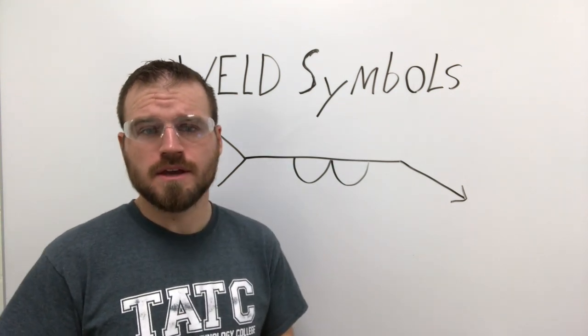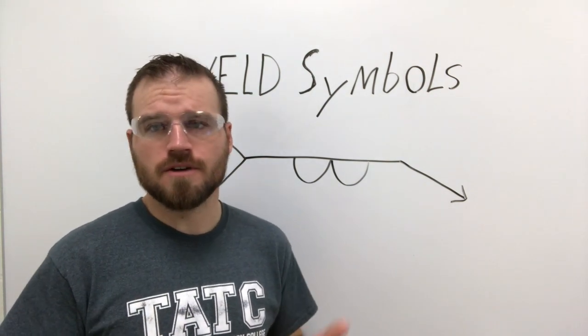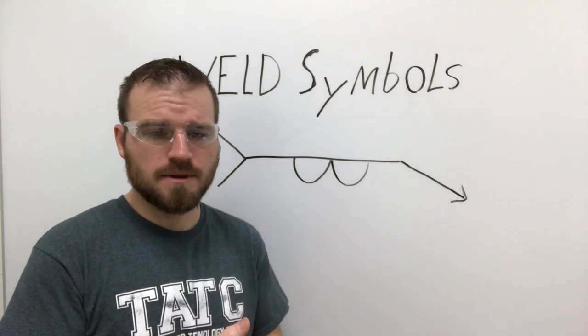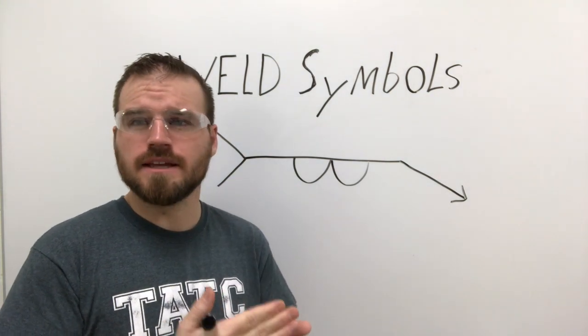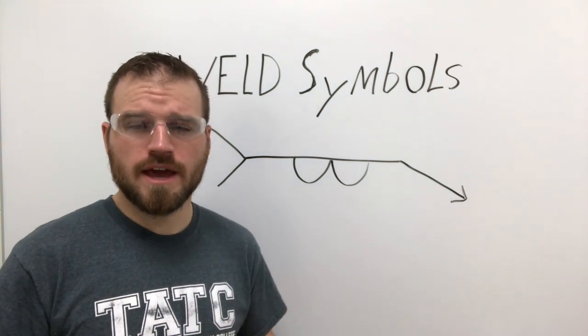The purpose of a stringer bead or surface bead is to build up the material. Sometimes this could be hard facing on a bucket. Sometimes you might need to build it up so that another plate can come and be pressed up against it and not have a gap. These welds are also called buttering welds.